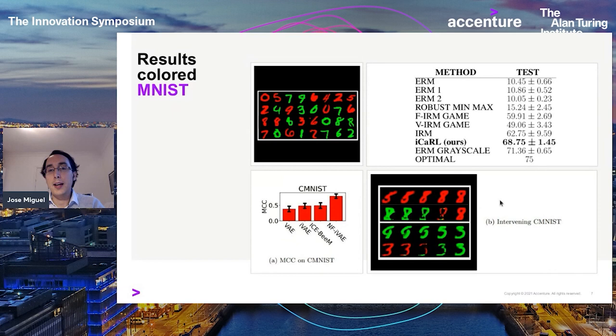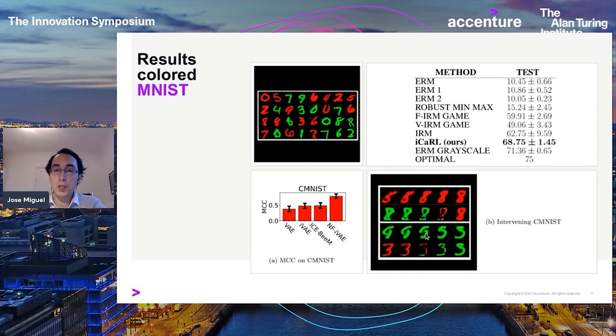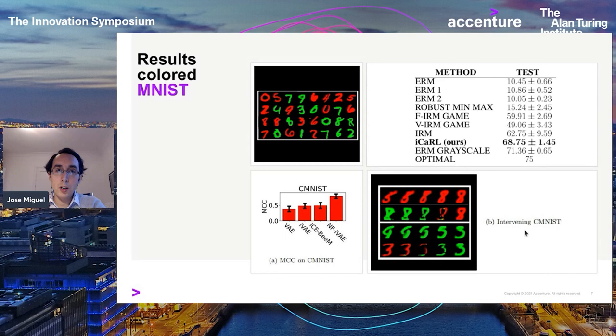We can also intervene on the causal latent variables. Non-causal latent variables — which are effects of the label — correspond to color changes in the images and are not useful for prediction. The model correctly identifies these as associated with color only. When we change the causal latent variables instead, the shape of the digit changes: a five becomes an eight, a nine becomes a three.